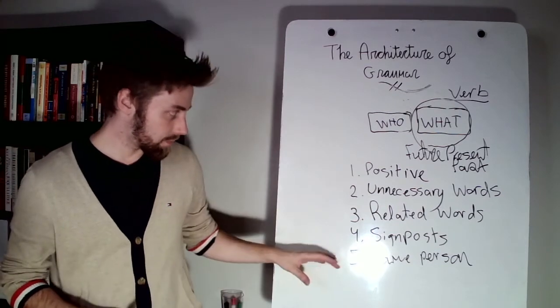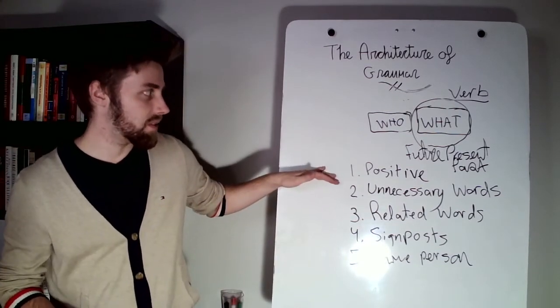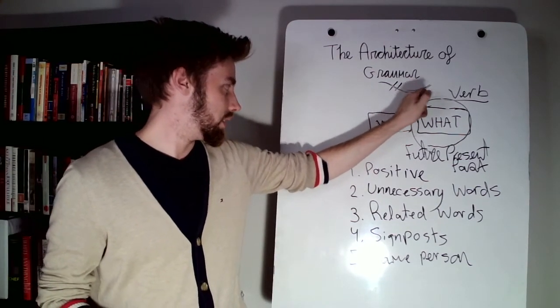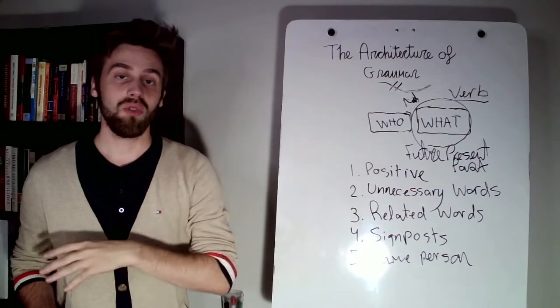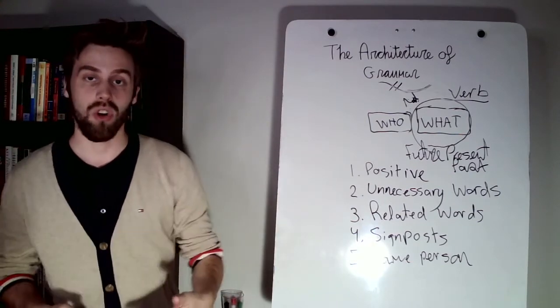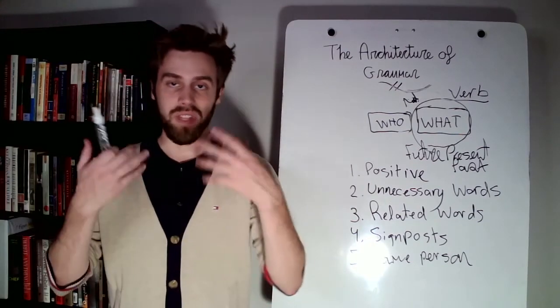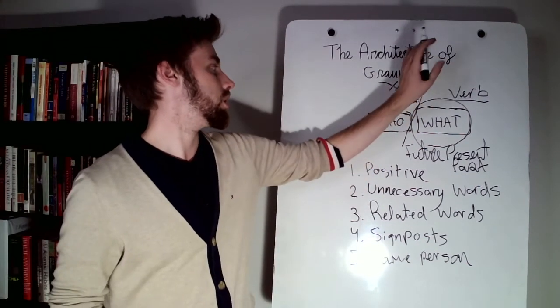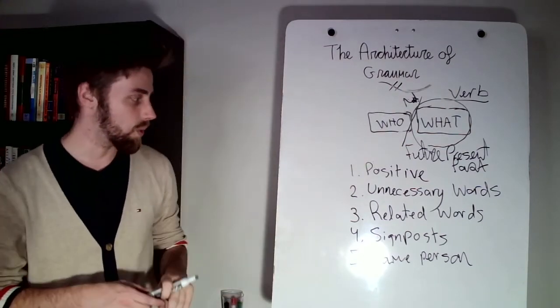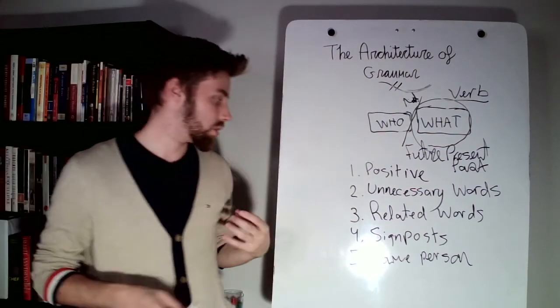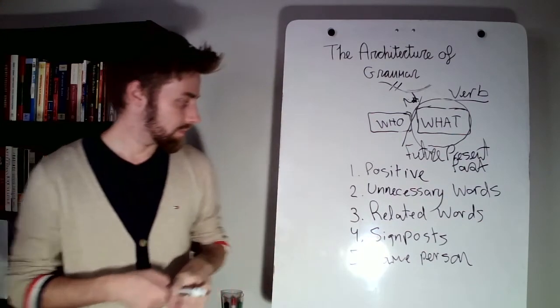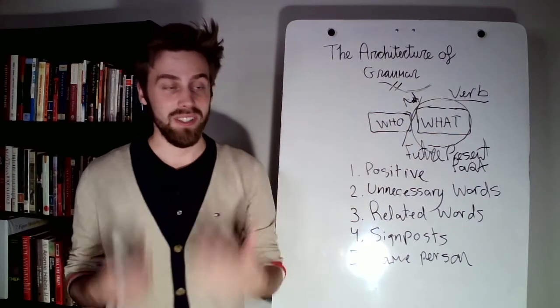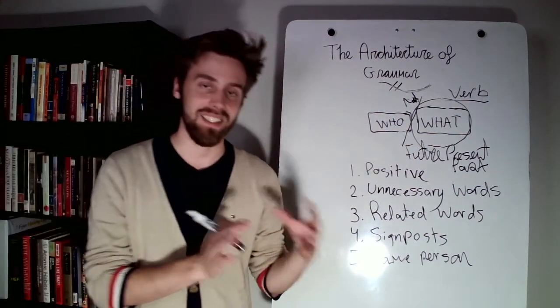So to recap, make sure you're using positive statements. Don't encumber your who and what with the not. Make sure you remove any unnecessary word. Put every word on trial for its life. Make sure that they provide value in the sentence. Keep related words together. Don't separate your who and your what as much as possible. Use signposts appropriately, moderately. Don't let them take over your writing. And then keep your verbs in the same person as much as possible unless it's necessary.